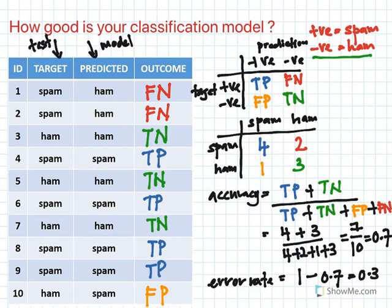In this first video in the series I covered finding classification accuracy using the confusion matrix. Note that this is not sufficient — there is more that I will share in the upcoming videos. Thank you.